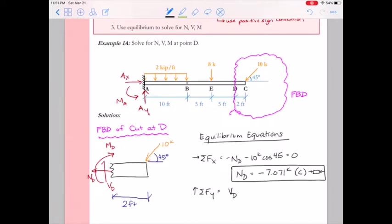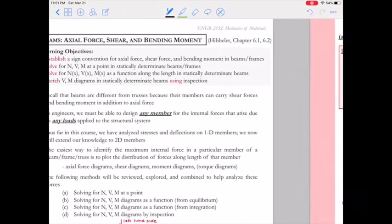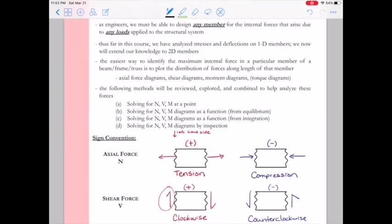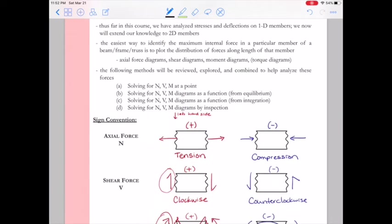All right, next we'll sum forces in the y. So that'll give us the shear at D, VD, minus 10 kips times sine 45 degrees, our vertical component, and that's going to equal zero. So VD is going to be 7.071 kips.